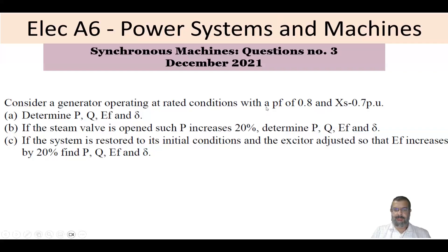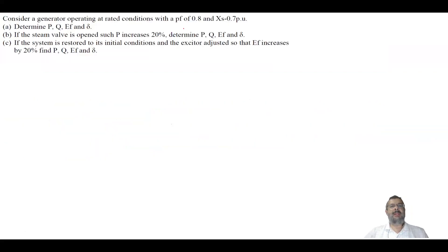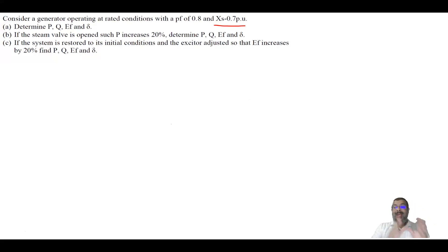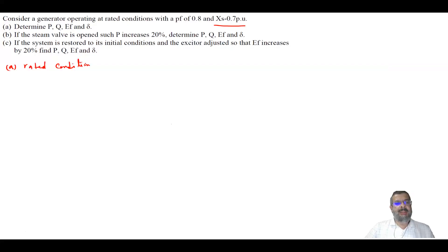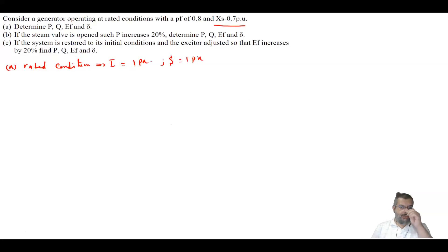As you can see, we are given the power factor and Xs as per unit, so we are not giving the synchronous reactance in ohms but in per unit. The generator works at rated conditions, meaning the current I equals one per unit and S equals one per unit.